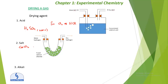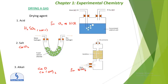The third drying agent is an alkali: quicklime, which is calcium oxide (CaO), or calcium hydroxide (Ca(OH)₂). This is used for drying ammonia gas (NH₃).